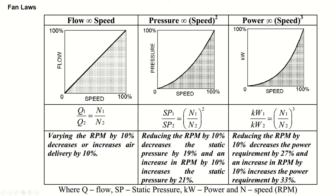The third fan law states that power is directly proportional to the cube of speed. Reducing RPM by 10% decreases the power requirement by 27%, and increasing RPM by 10% increases the power requirement by 33%.